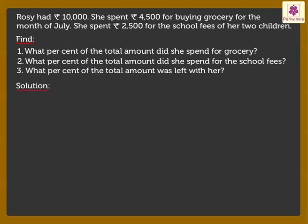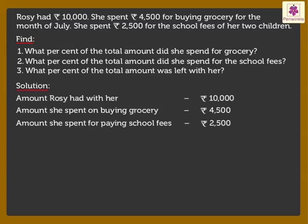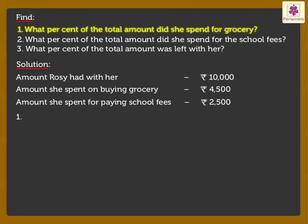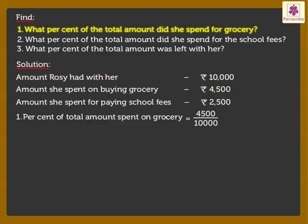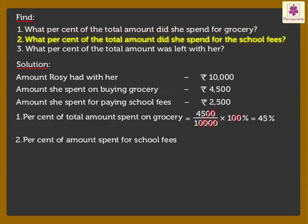First, we write the information given as shown. To find the percent of total amount Rosie spent on grocery, we divide the amount spent on grocery by the total amount and multiply it by 100% to get 45%. Similarly, to find the percent of total amount spent for school fees, we divide the amount spent on school fees by the total amount and multiply it by 100% to get 25%.